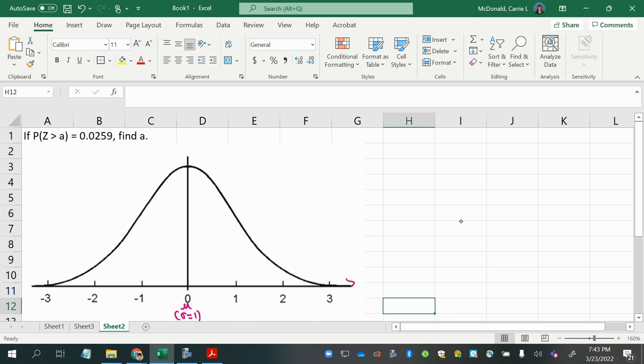And if the probability of something being greater is 0.0259, that's a very tiny probability. So I know that this Z-score is going to be somewhere way over on the right with a very tiny probability to the right there of 0.0259. So now I know that A is a positive Z-score, I don't know exactly what it's going to be, but it's definitely going to be positive.